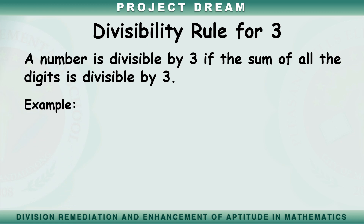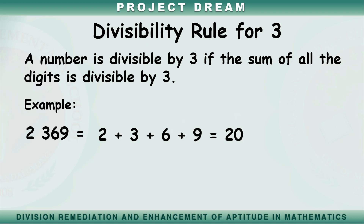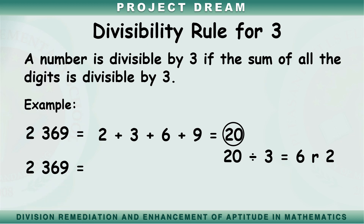Another example. Is 2,369 divisible by 3? Let's add the digits: 2 plus 3 plus 6 plus 9 equals 20. The sum of the digits is 20. Is 20 divisible by 3, or can we divide 20 by 3 without remainder? No — 20 divided by 3 equals 6 remainder 2. Therefore, 2,369 is not divisible by 3.